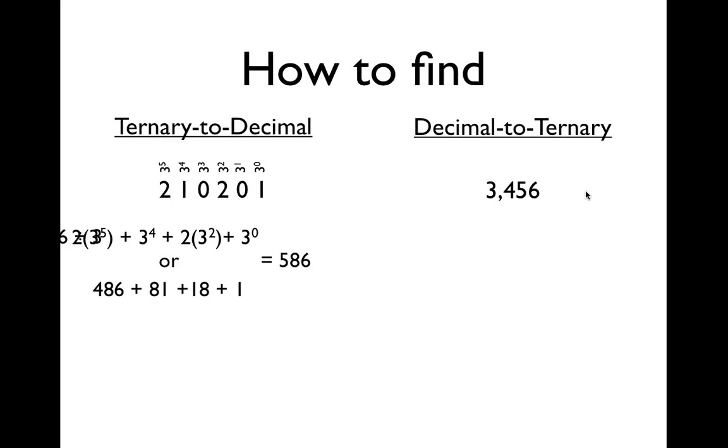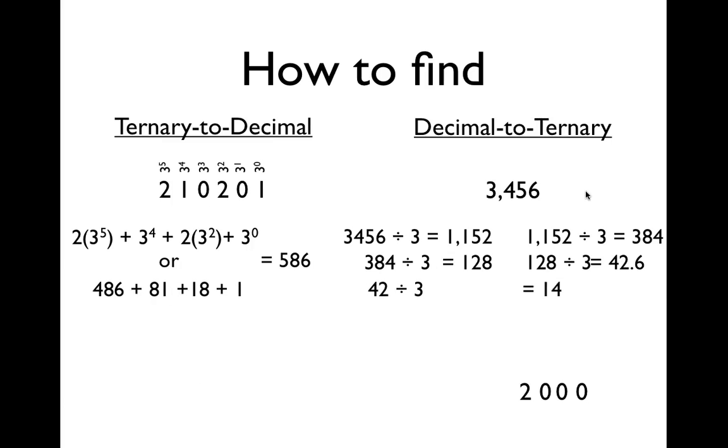And then decimal to ternary, what you would do, you would just divide by 3, and if you don't get a remainder, then in the bottom, you just add a 0 to the right-hand side. And you keep going, and if you don't get a remainder, it's just a 0, and again, if you don't get a remainder, you add a 0. But if you do get a remainder, 0.6 would give you a 2, since that would be 2 over 3, so you would put a 2 there, and then if you have a remainder of 0.3, that would be equivalent to 1 over 3, so you add a 1 to ternary, and you would keep going until you round it down to 0. And that's your final answer.